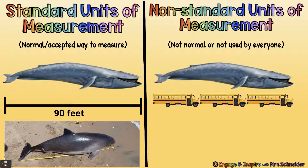A standard unit of measurement: a standard way to measure a blue whale would be to measure it with a tape measure and say this blue whale is 90 feet. Most people would know how long that is. A non-standard unit of measurement would just say this blue whale is three buses long. But you don't know exactly what size bus, what kind of bus, so if somebody else were to measure the blue whale with a different bus, it might be a different number of buses.